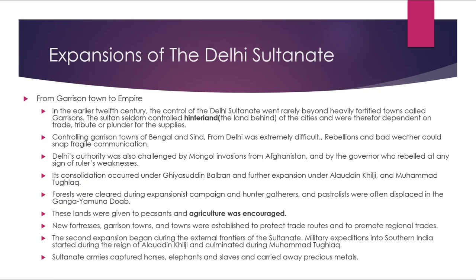Expansion of the Delhi Sultanate: From Garrison Town to Empire. In the early 13th century, control of the Delhi Sultanate rarely went beyond the heavily fortified towns called garrisons. The Sultan seldom controlled the hinterland and was therefore dependent on trade, tribute, and plunder for supplies. Controlling garrison towns of Bengal and Sindh from Delhi was extremely difficult, and rebellions and bad weather could snap fragile communications. Delhi's authority was also challenged by Mongol invasions from Afghanistan. Consolidation occurred under Ghiyasuddin Balban and further expansion under Alauddin Khilji and Muhammad Tughlaq. Forests were cleared, hunter-gatherers and pastoralists were displaced in the Ganga-Yamuna Doab, and these lands were given to peasants while agriculture was encouraged. New fortresses and garrison towns were established to protect trade routes. Military expeditions into southern India started during Alauddin Khilji's reign and culminated during Muhammad Tughlaq. Sultanate armies captured horses, elephants, slaves, and precious metals.